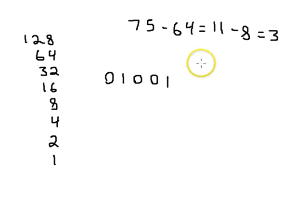All right. So now, can we subtract 4? Well, no, we cannot subtract 4 from 3. But can we subtract 2? Yes, we can. So minus 2 equals 1. Can we subtract 1 from that? 1 minus 1 equals 0. So now, this is 75 in binary.